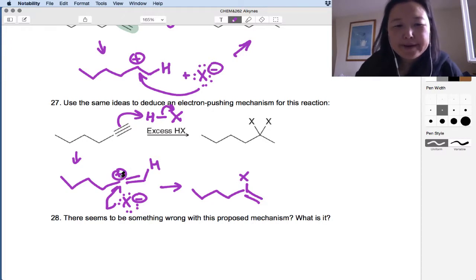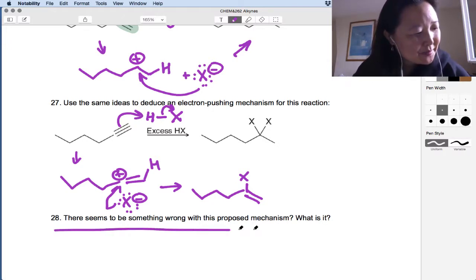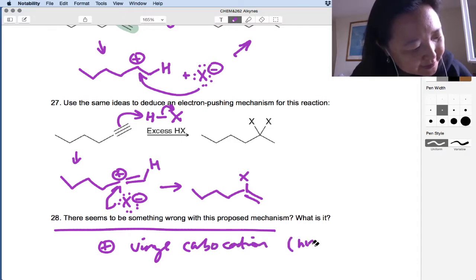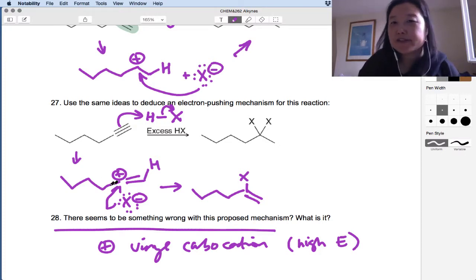Now we learned before that this positive charge on an SP2 carbon is not very stable at all. So there is something wrong with that. And that's what this question is about. We don't, a positively charged vinyl, we call it a vinyl carbocation, is pretty high energy. It's not very stable. So it's not easy to form this in the first step. So that would be the main problem with this mechanism.